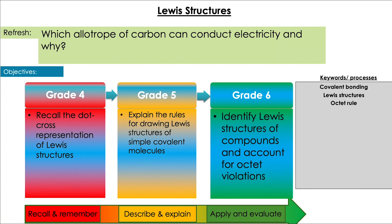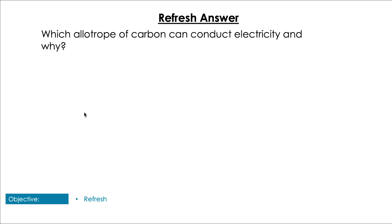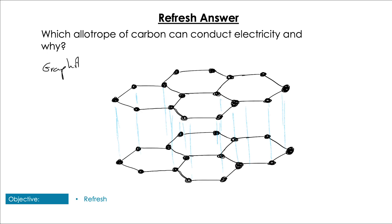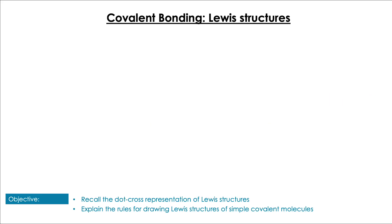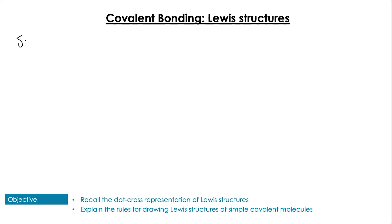Hopefully you got that as graphite. Remember, graphite has the delocalized layer of electrons between the layers which allows the conduction of charge through the extended covalent compound, allowing it to conduct electricity. So what are Lewis structures? Quite simply, these are structures that are a simplification that allow us to show the position of the outer shell electrons in a molecule.